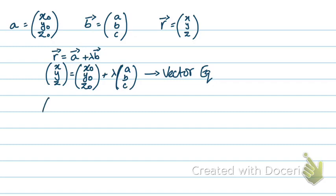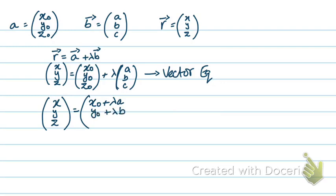Another way to write the line equation is in parametric form. The parametric form is: X = X0 + lambda*A, Y = Y0 + lambda*B, and Z = Z0 + lambda*C, where (X0, Y0, Z0) is the fixed point, lambda is the scalar multiple, and (A, B, C) is the direction vector. This is the parametric form of a line.